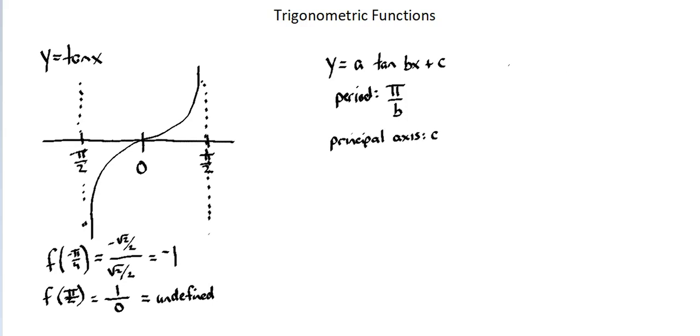So let's evaluate the function y equals 2 tangent 1 half x minus 4. Notice I do have an a value. It's simply not an amplitude measurement, but there is an a value in this function, the value of 2.